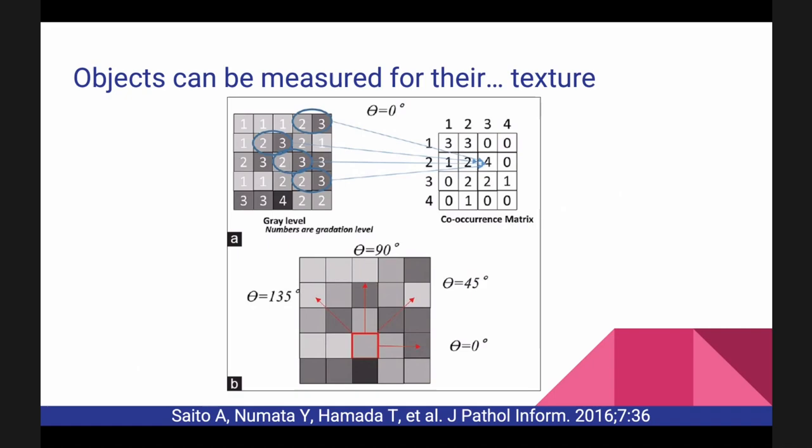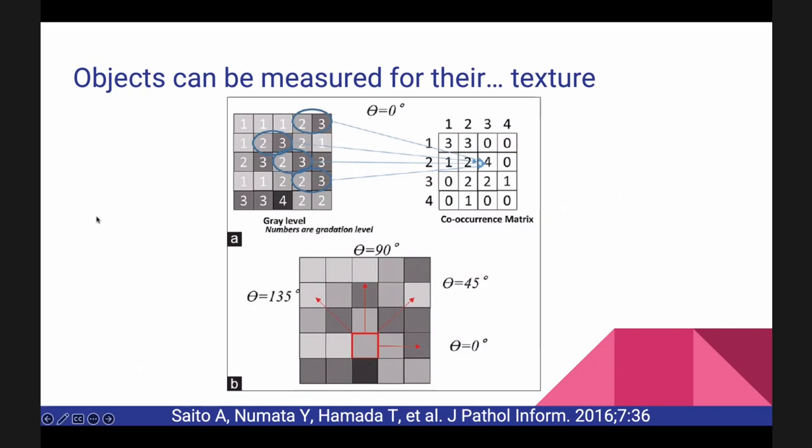That's where image-based profiling comes in. We take as many measurements as we can — hundreds or thousands — and then group cells to see if interesting clusters fall out. It's not conceptually fancy: take a ton of measurements, look at the groups, see what happens. But it makes some pretty magical things possible.